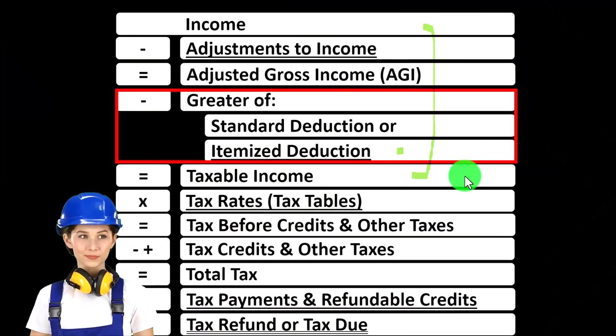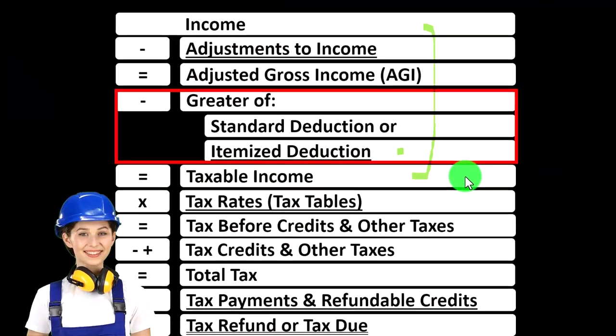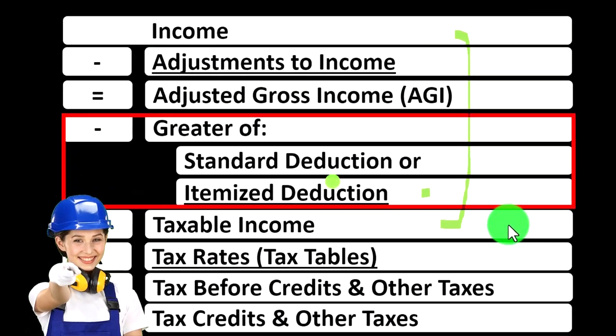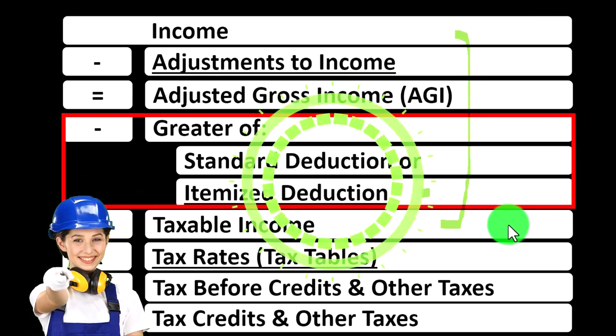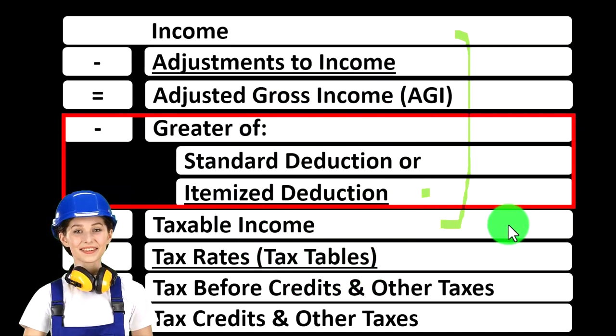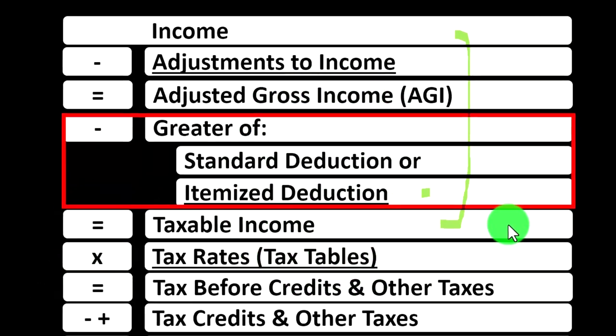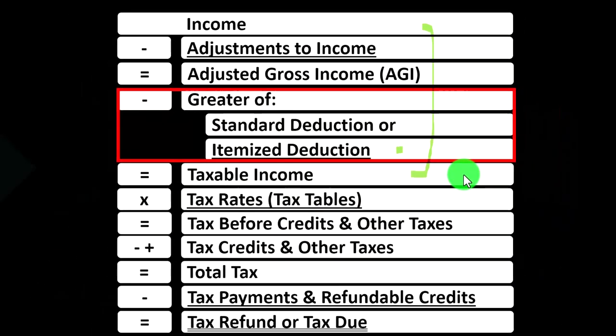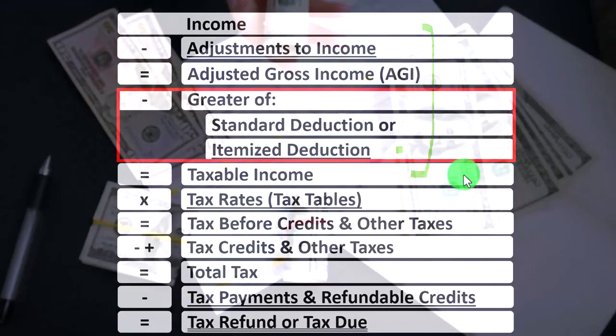Everything's upside down with taxes — everything's topsy-turvy — meaning that taxable income we want as low as possible, as opposed to normally where we want net income as high as possible.